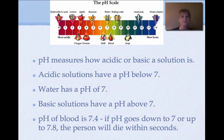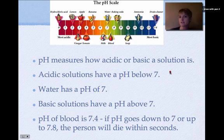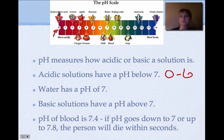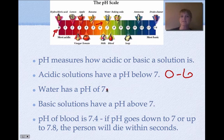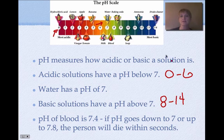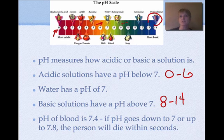The pH scale measures how acidic or basic a solution is. Acidic solutions have a pH below seven. Starting at zero you have hydrochloric acid — essentially stomach acid — moving up through lemon, banana, and reaching neutral water at pH seven. Basic solutions have a pH above seven, ranging from eight to fourteen — baking soda is around eight, then soap, ammonia, and drain cleaner at the most basic end.